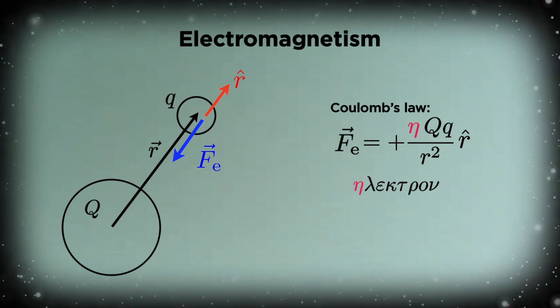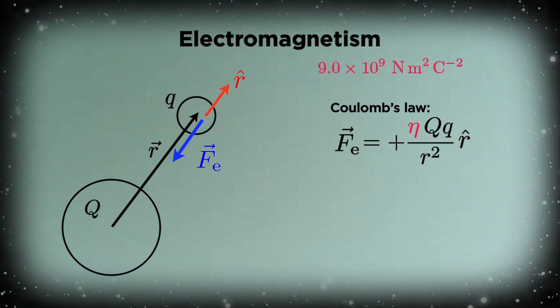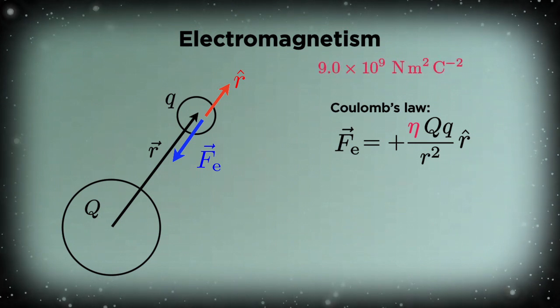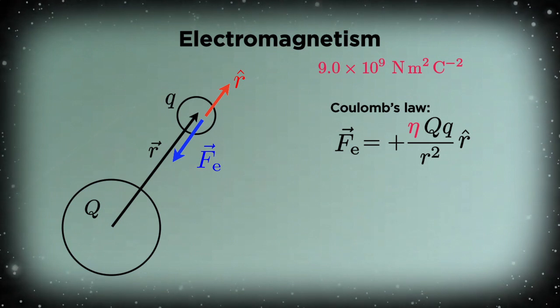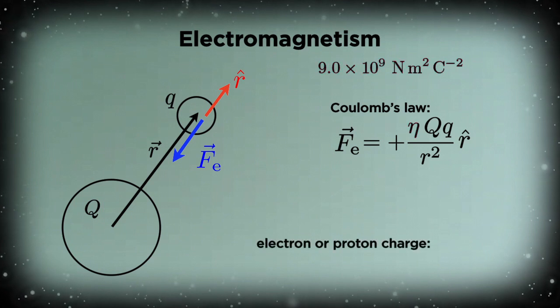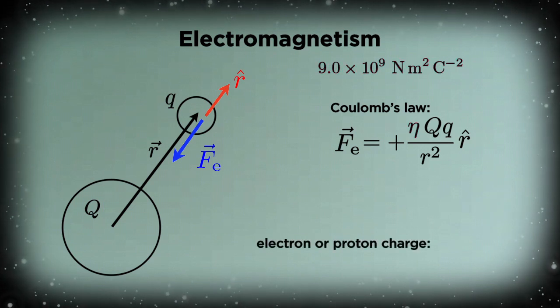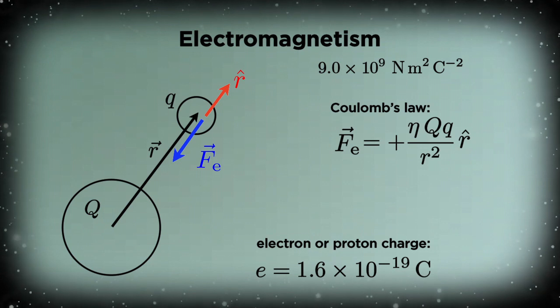I should add, though, that I made up this notation. More often, you'll see that constant written as one over four pi epsilon naught. But that's needlessly complicated for our purposes. Numerically, eta is nine times ten to the nine newton meters squared per coulomb squared, where the coulomb is the standard unit of charge. In those units, the electron and the proton both have a charge of magnitude 1.6 times 10 to the minus 19, which we'll represent with the letter e.